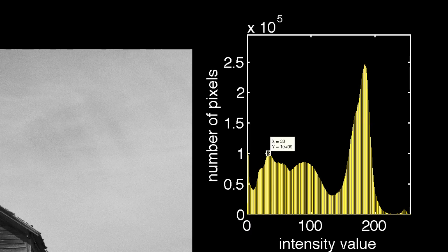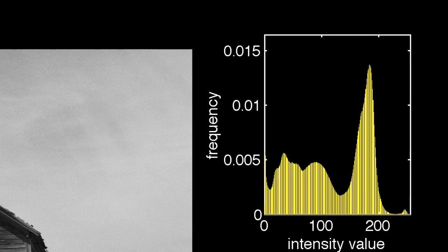At this location we find that there are about 100,000 pixels that have an intensity equal to 33. Sometimes it's convenient to divide the pixel counts by the total number of pixels and make a normalized plot. Now the height of each bar is the proportion of pixels that have a particular intensity.